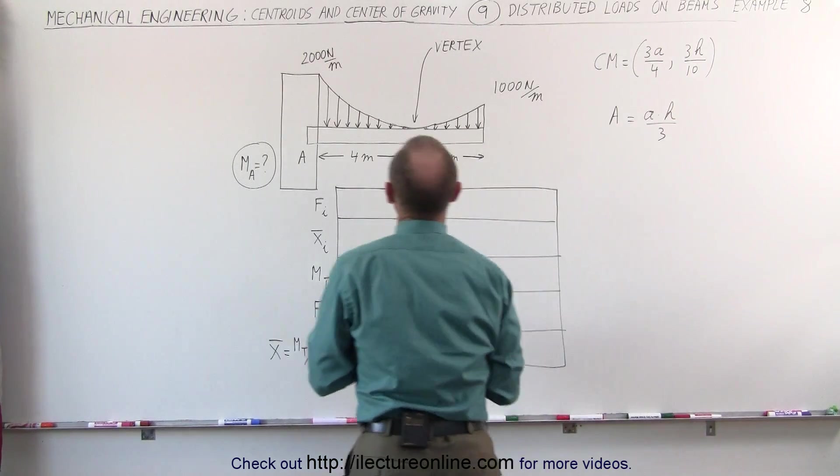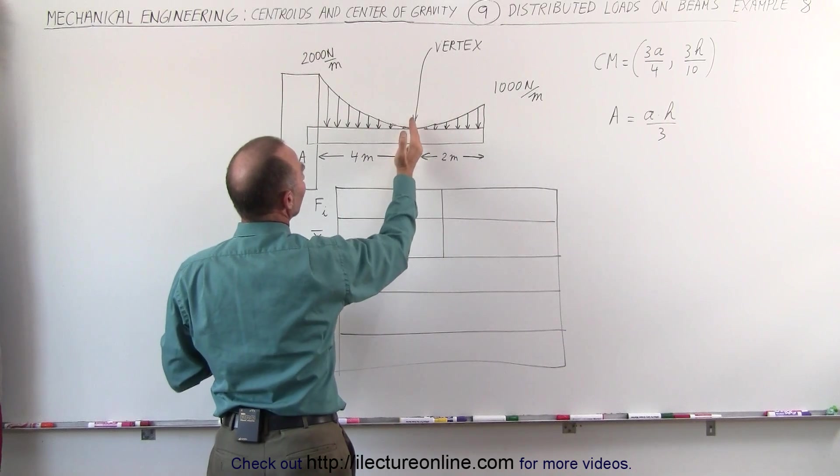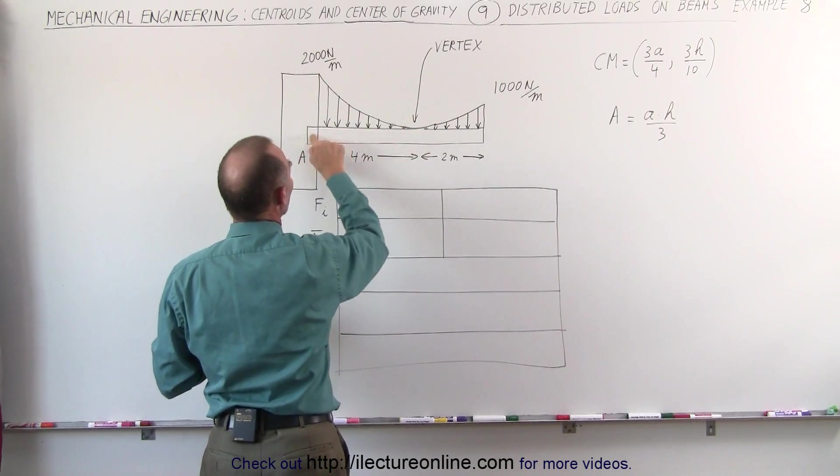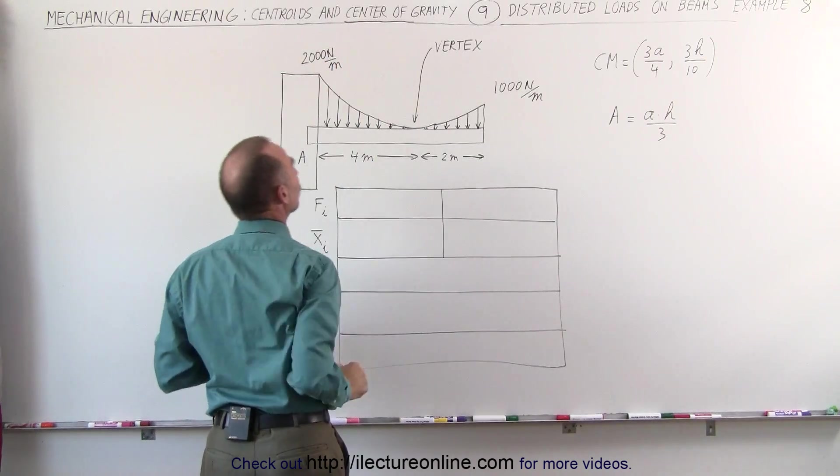Now what's A and H again? A is the distance from the vertex to the end. In this case, A would be the distance from 0 to 4 or 4 meters. H is the height, that would be 2000 N per meter.